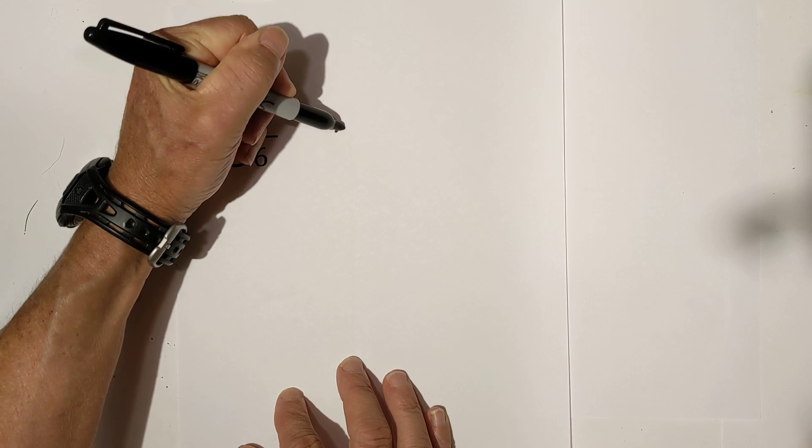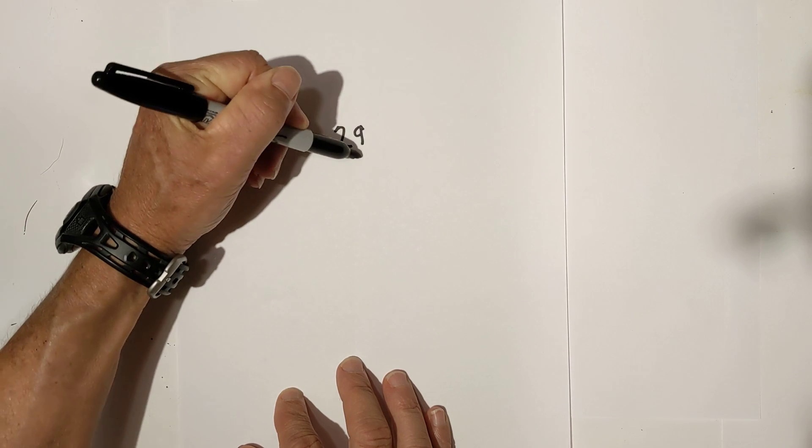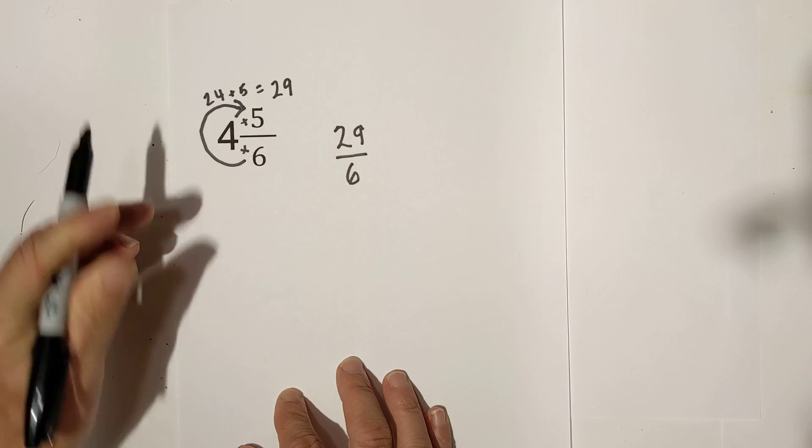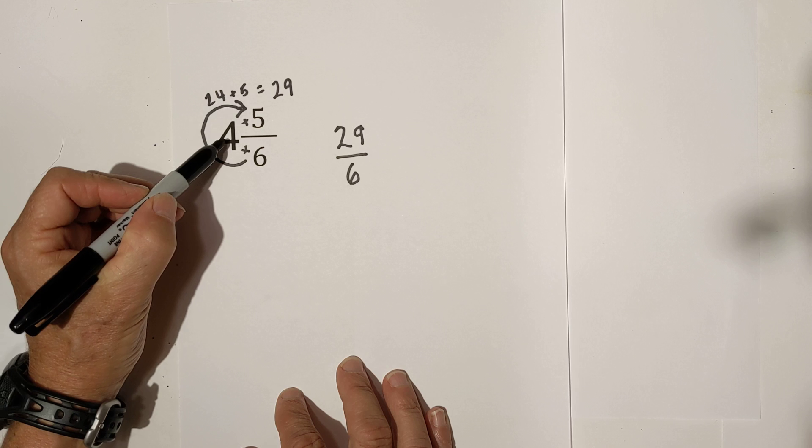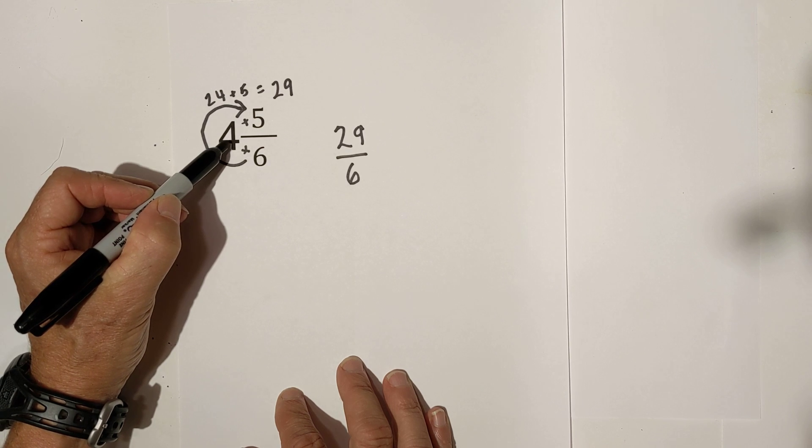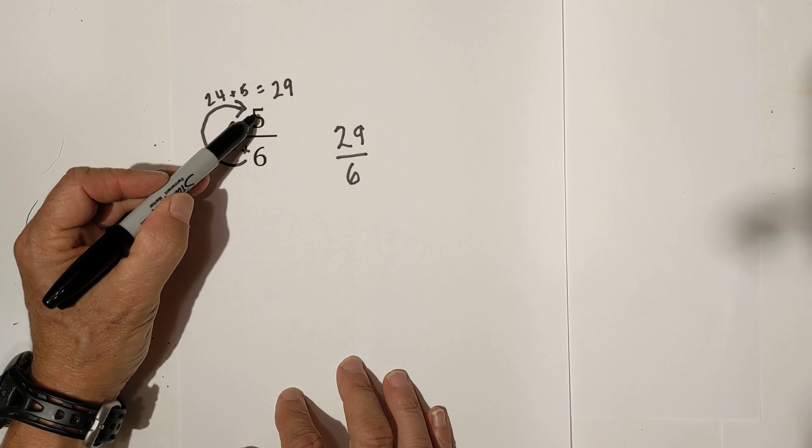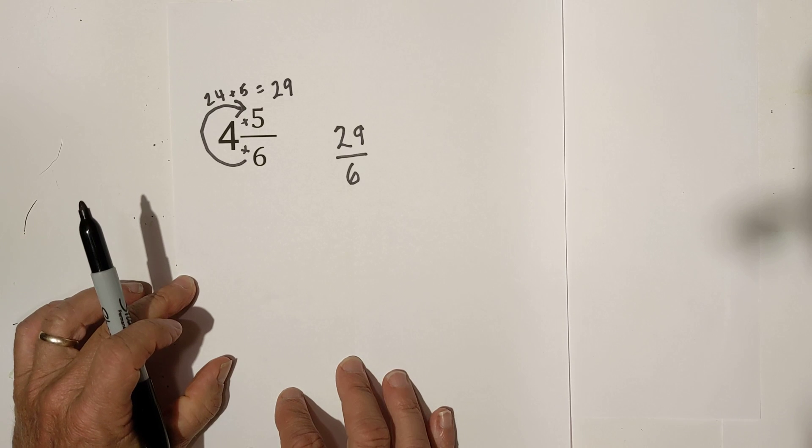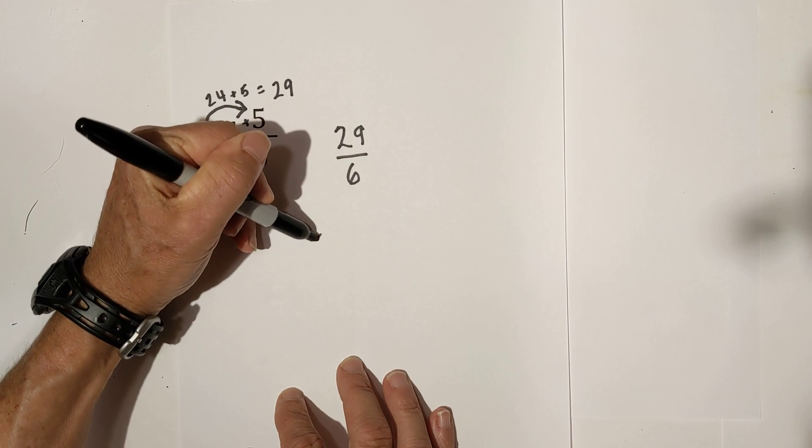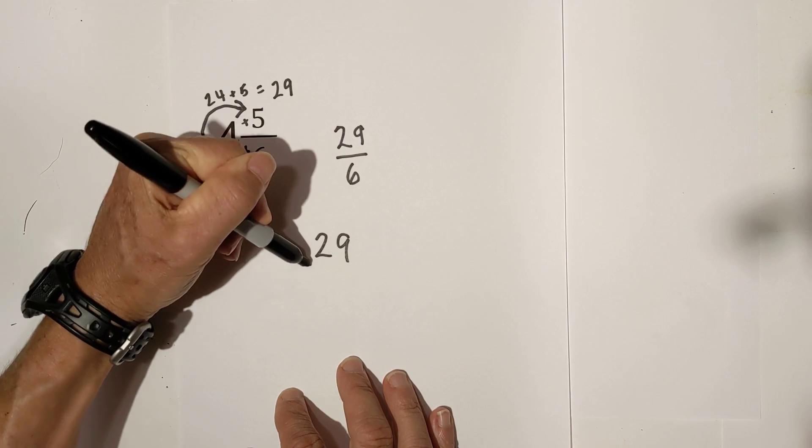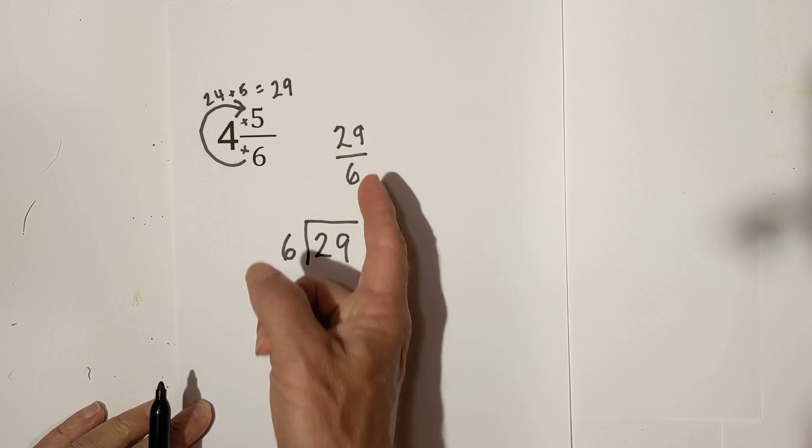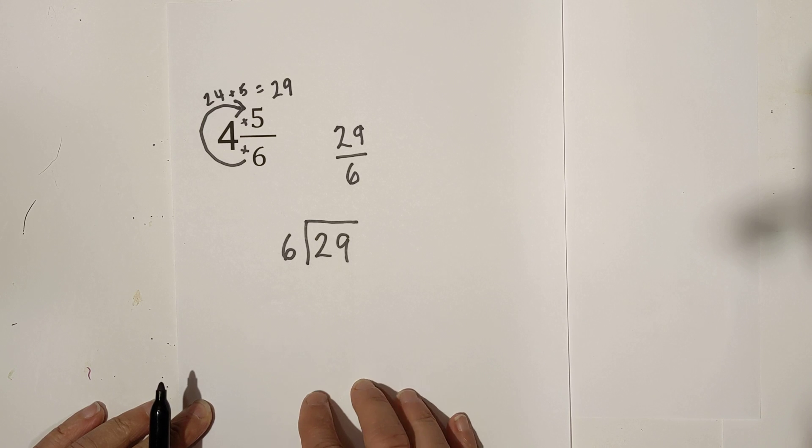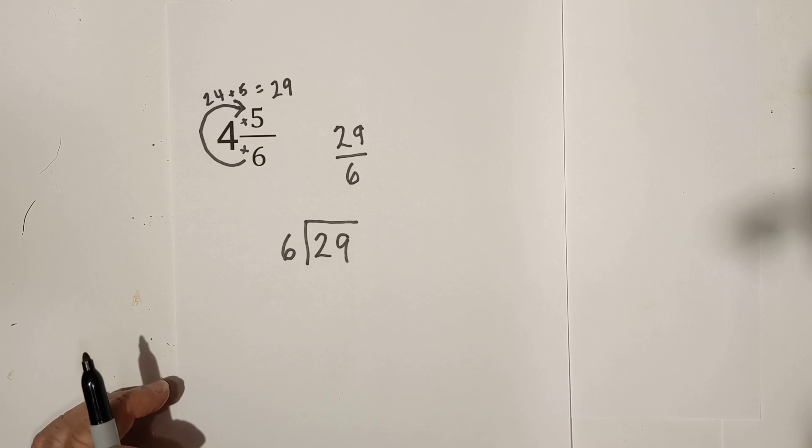So it's going to be 29 over 6. Again 6 times 4 multiply first then I add 5 that equals the 29. Now just to show you let's do this let's go 29 and let's convert this improper fraction back to a mixed number. Back to a mixed number and see how we're doing there.